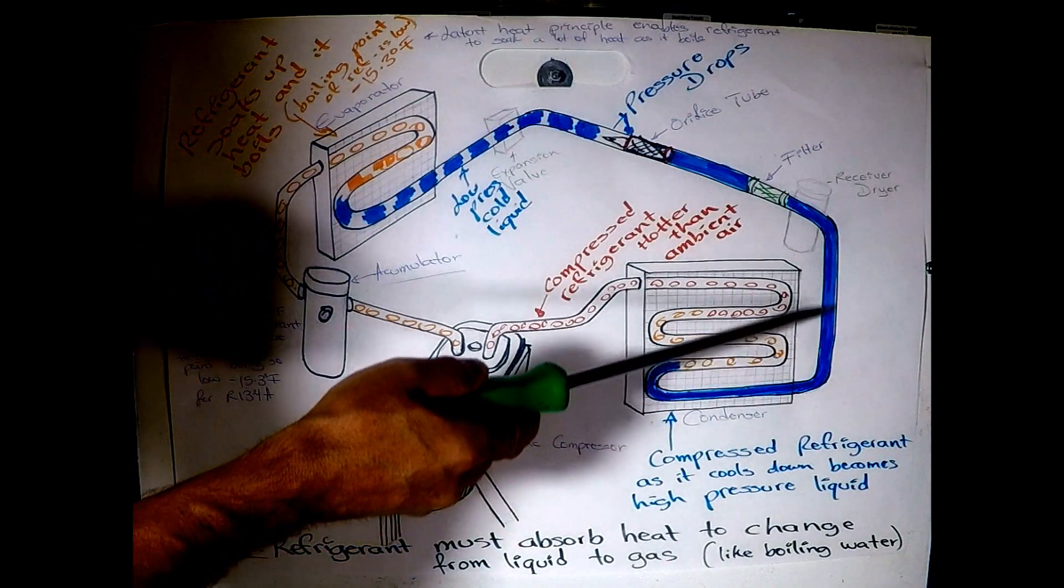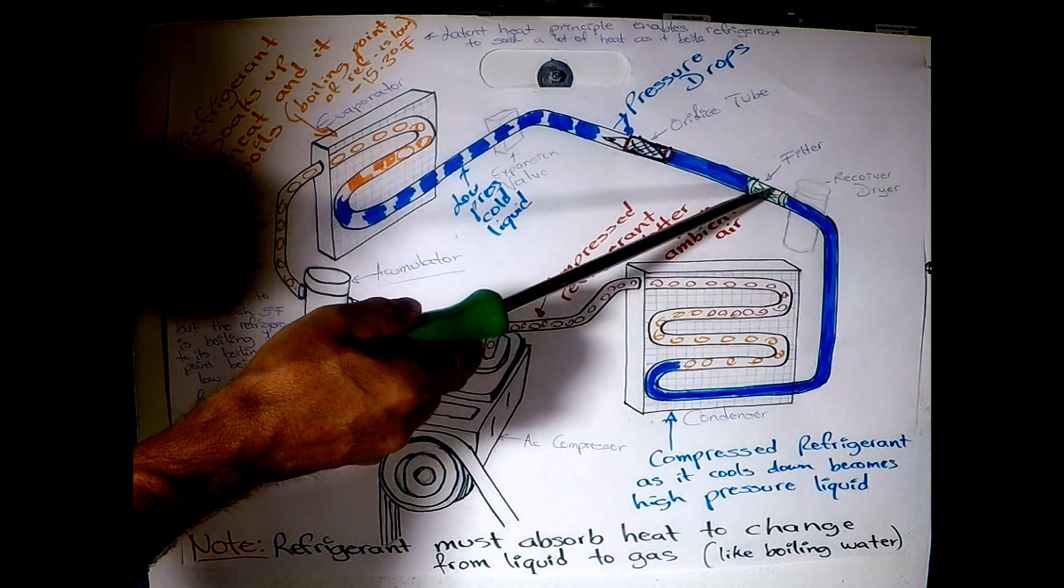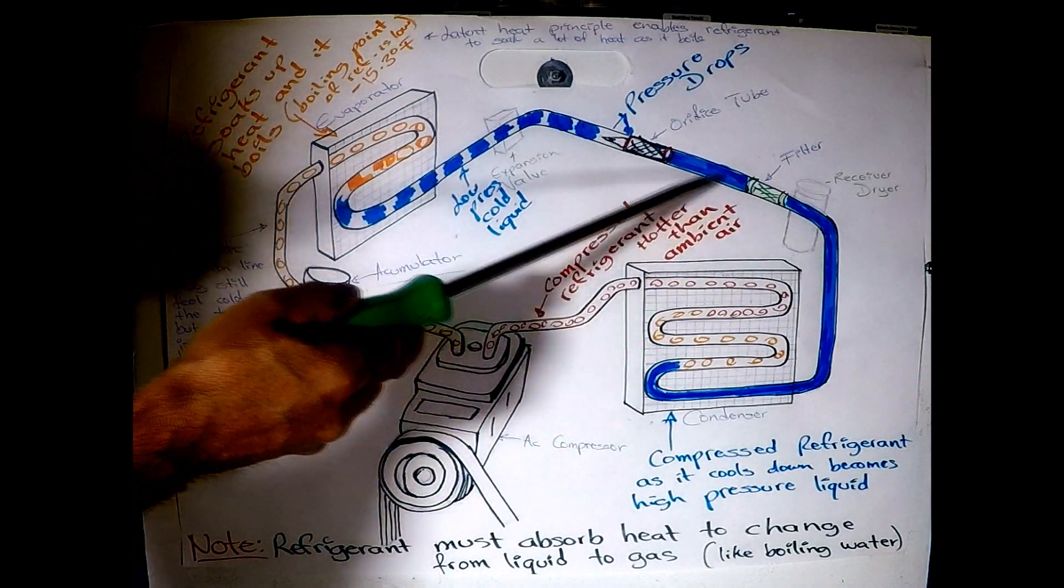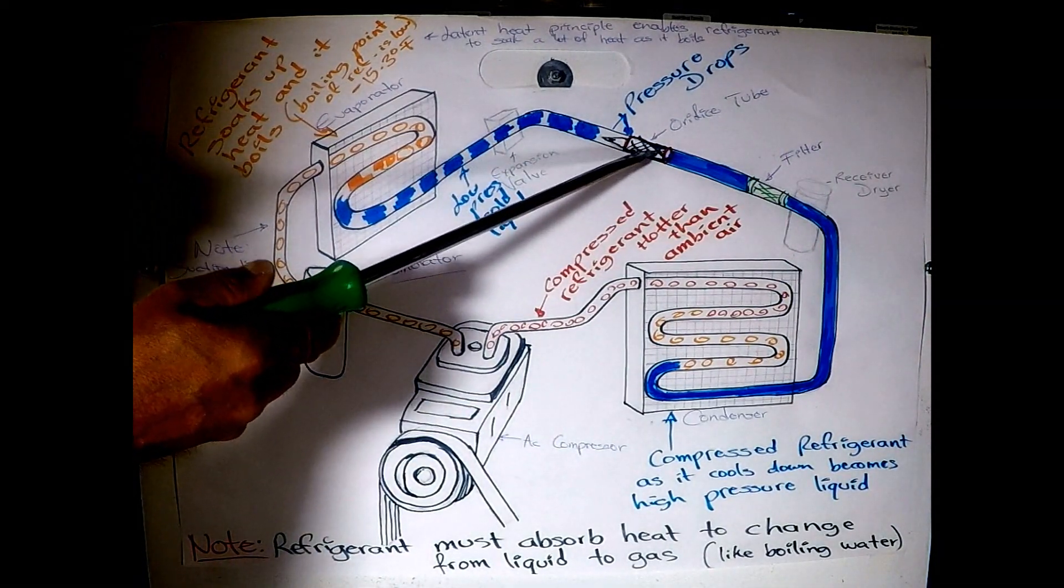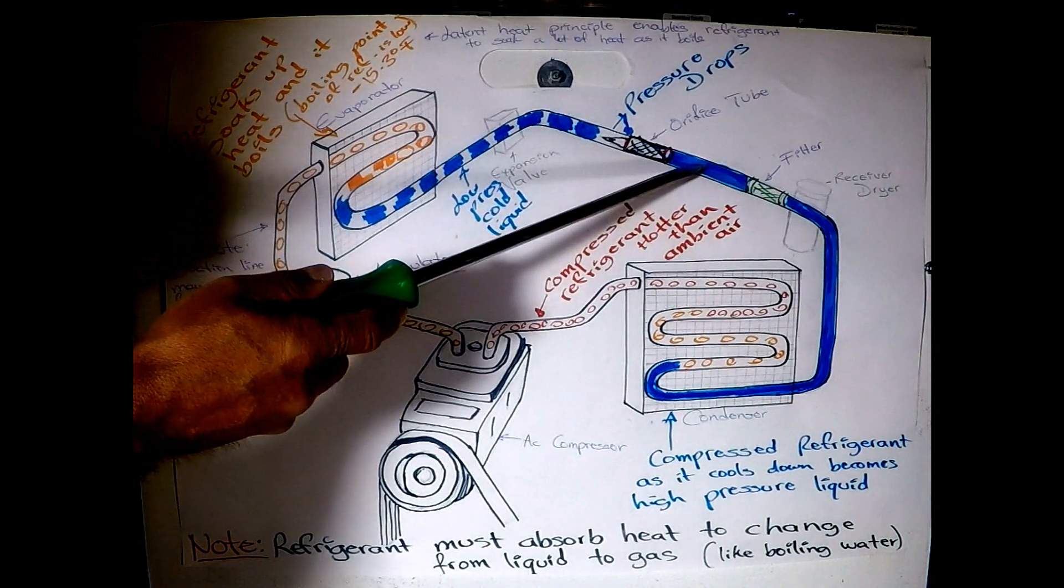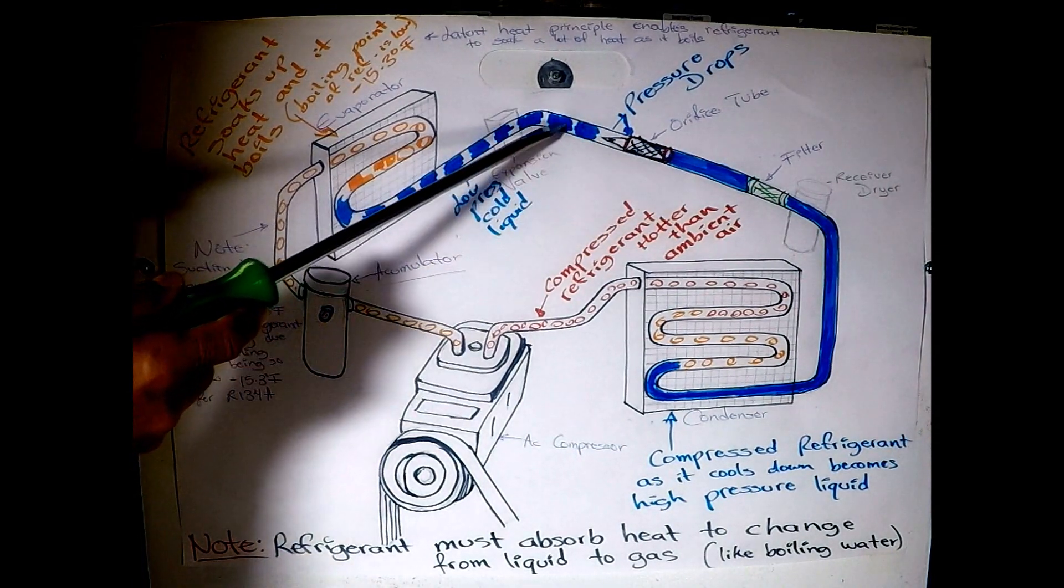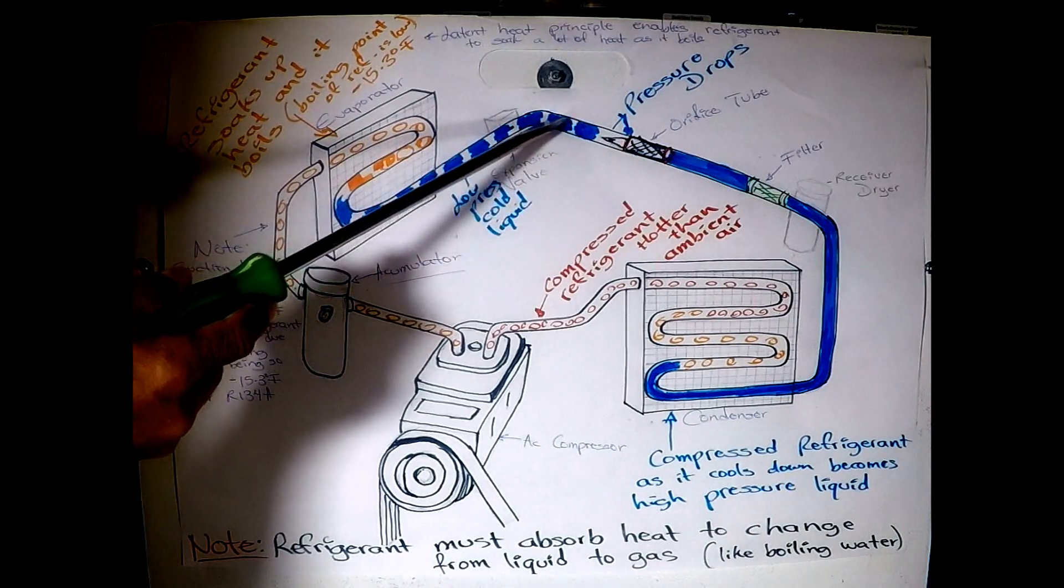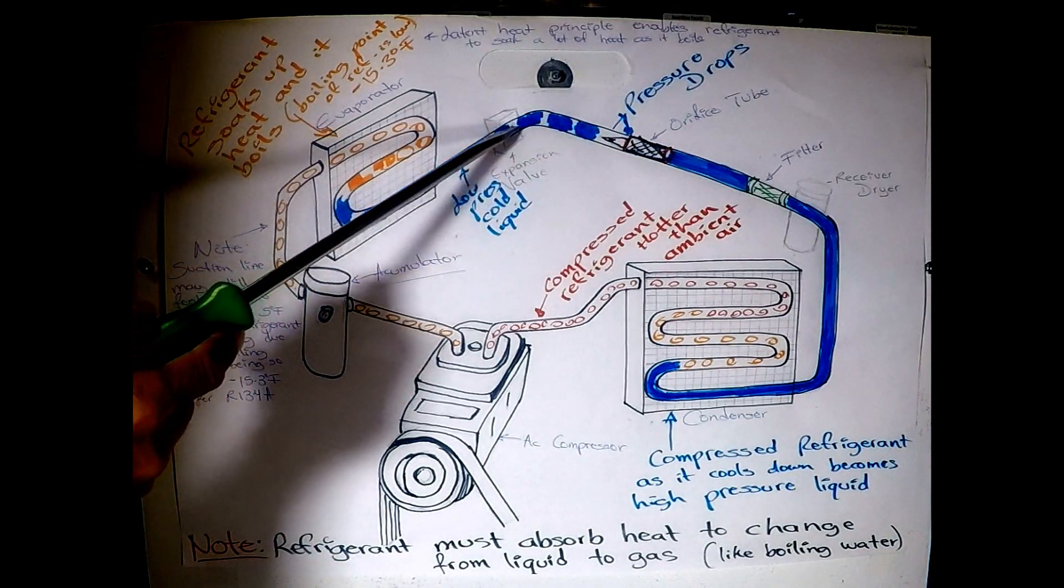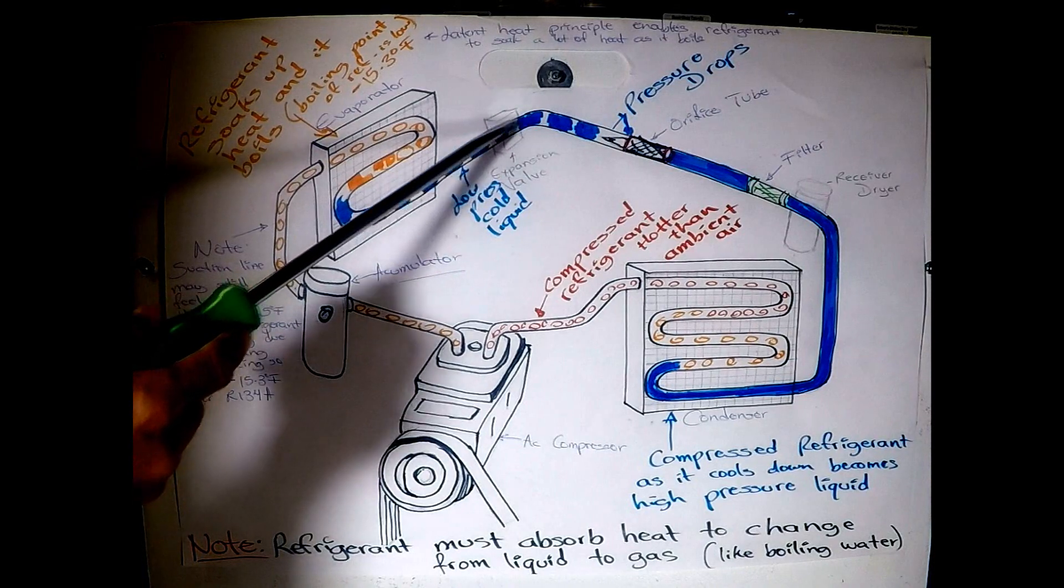Then it continues to flow, and if it has a filter, then it will pass through the filter. Then it's right here at the orifice tube that the pressure drops. So the refrigerant is going to change from a very high pressure liquid to a low pressure liquid. Now when the pressure drops, it starts expanding, because it's under a low pressure now. But it's still in liquid form.